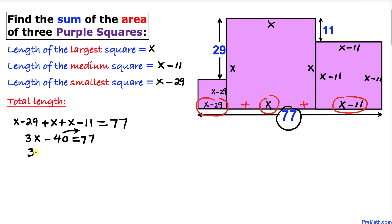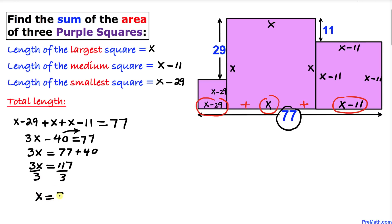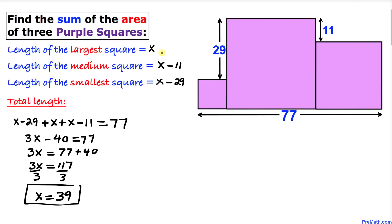Moving 40 to the other side gives 3x equals 77 plus 40, which means 3x equals 117. Dividing both sides by 3, x turns out to be 39. So the side length of the large square is x equals 39.